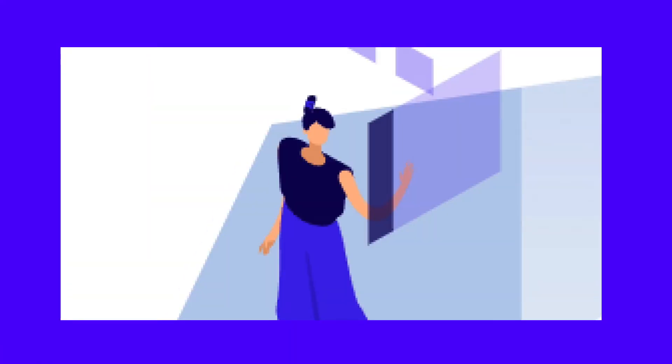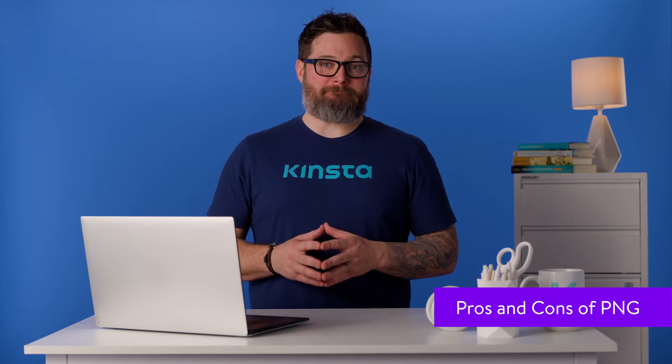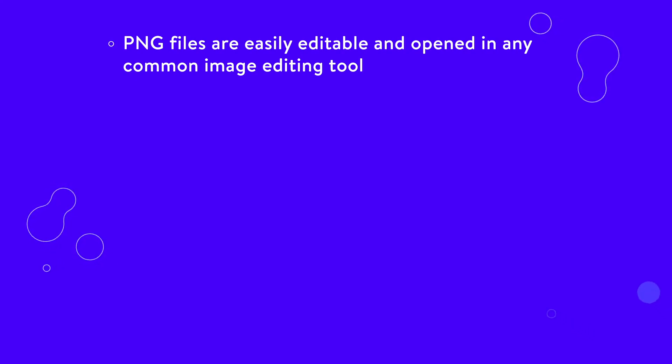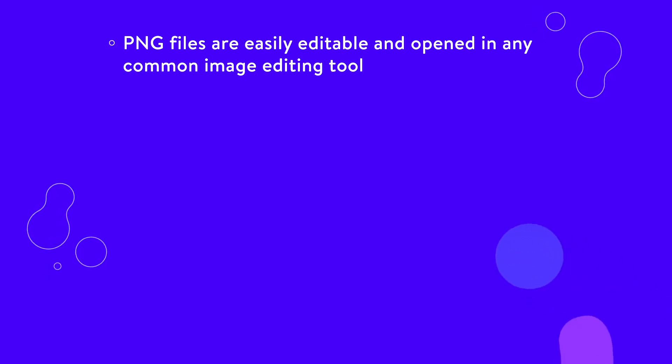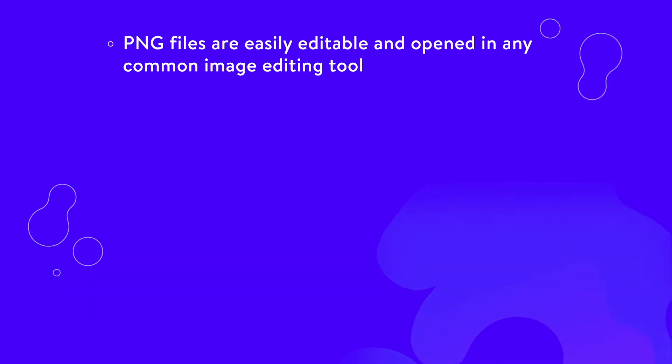Sometimes the damage is negligible, especially when scaling down, and sometimes it can make an image blurry and completely unusable. Still, the prevalence of PNG makes it a good candidate for general purpose usage. This file type supports transparency, but not animation. PNG files are easily editable and opened in any common image editing tool — there's no need to pay for advanced programs. At most, you may need to download a free editor like GIMP.